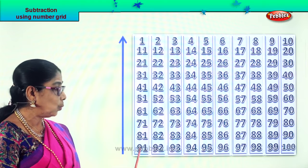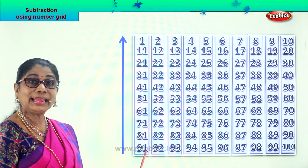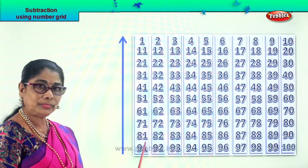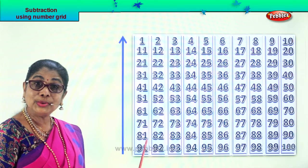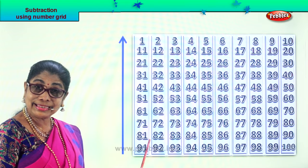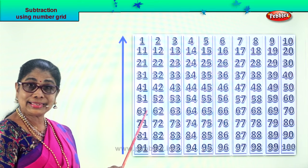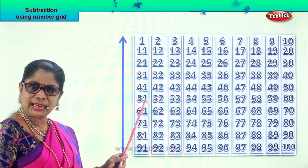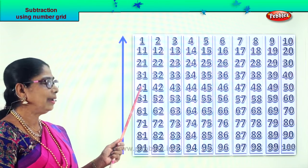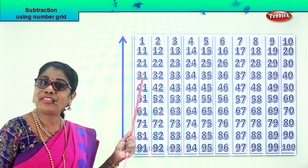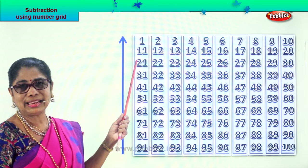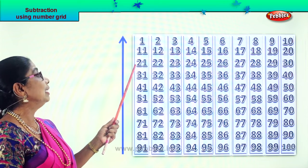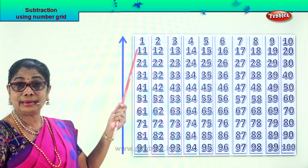Now look at this — ninety one. From ninety one take away ten, what will you get? Eighty one. From eighty one, you minus ten, you get seventy one. Seventy one minus ten — sixty one. Sixty one minus ten — fifty one. Fifty one take away ten — forty one. Forty one minus ten — thirty one. Thirty one minus ten — twenty one. Twenty one minus ten — you get eleven. Eleven minus ten — one.